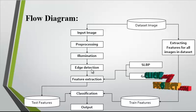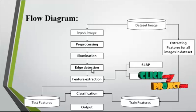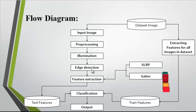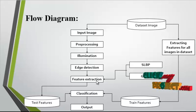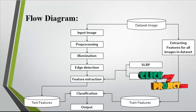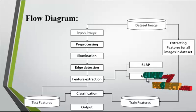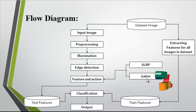In the edge detection part, we extract the boundary of the required object from the whole image, and the background is subtracted. Then feature extraction is undertaken, implementing two major algorithms: SLBP for feature extraction and Gabor feature extraction to extract features from the image.